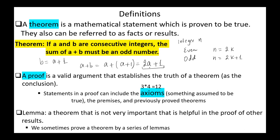Hence, a proof. A proof is a valid argument that establishes the truth of a theorem as the conclusion. Statements in the proof can include the axioms — for example, 3 multiplied by 4 equals 12 — something assumed to be true, the premises, and the previously proved theorems.